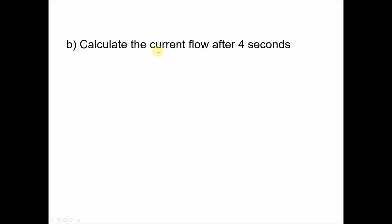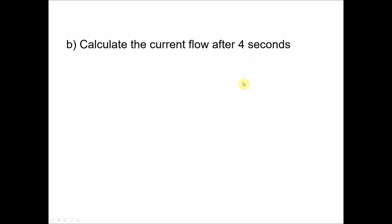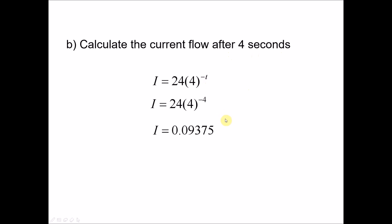Question B: calculate the current flow after 4 seconds. This means t now becomes 4. So again, we substitute t equals 4 into the equation and use the calculator to calculate the answer.